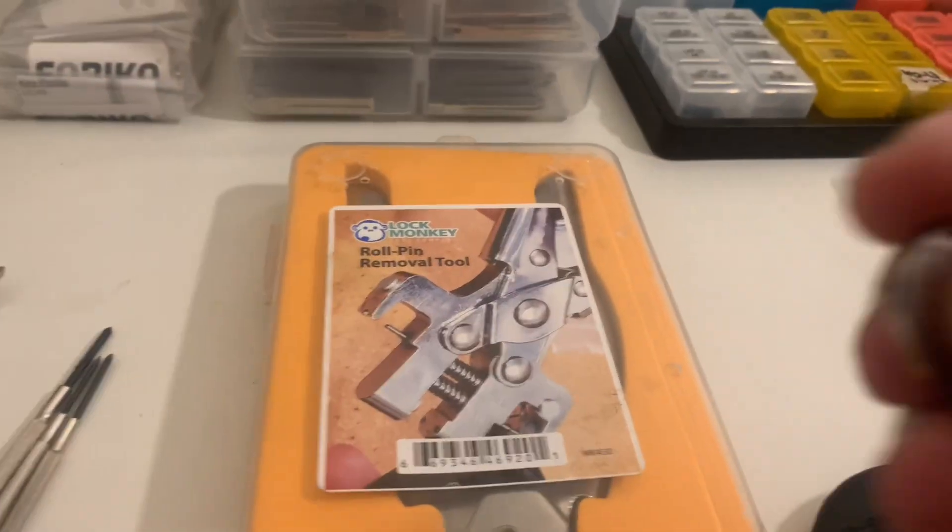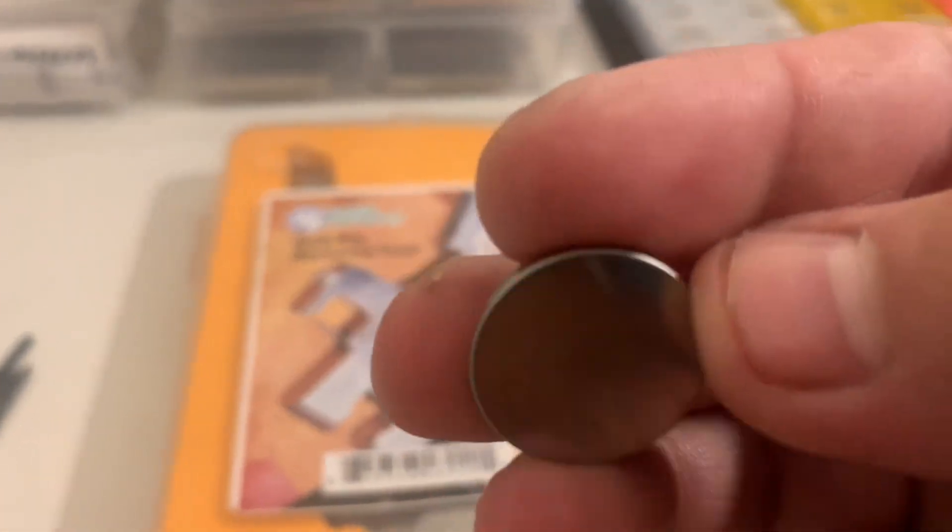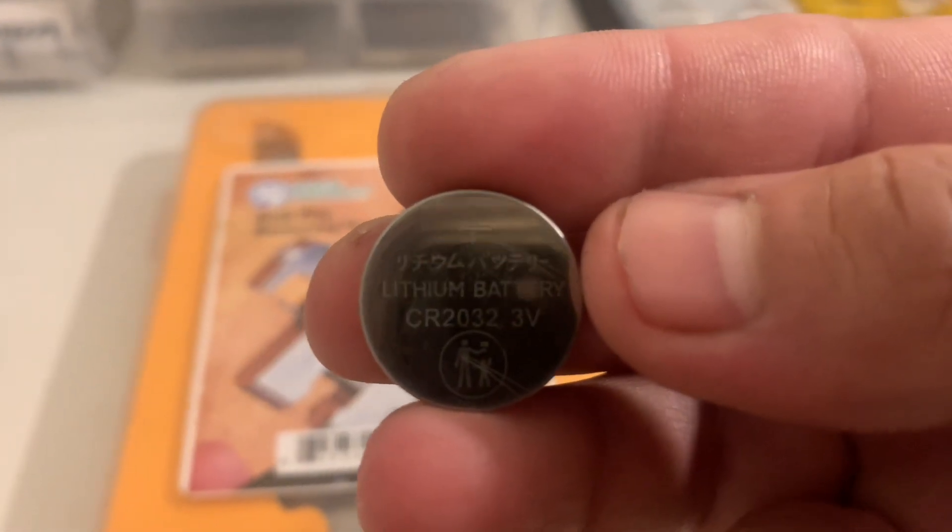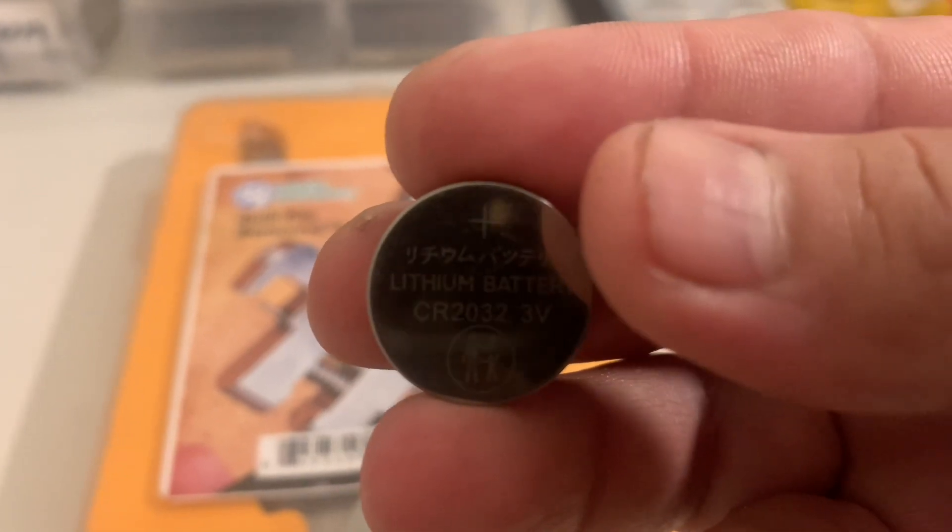You're going to need plenty of batteries in general. There are different kinds, but for the Build a Key System, CR2032 is what you'll generally need.